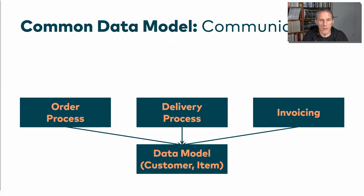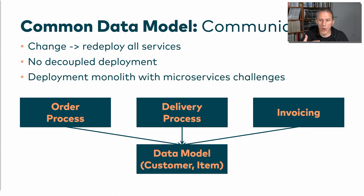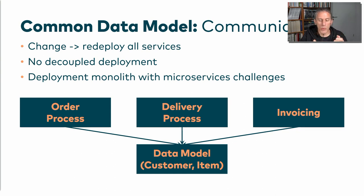Congrats, because now if we do have such a change, we would need to redeploy all of the services. So we don't have a decoupled deployment anymore. I would argue that we have created a monolith — a deployment monolith — which means that all of this stuff needs to be deployed together if we have some change in that common data model, but we also have the microservices challenges. So we do have the complexity, but also that monolithic deployment.